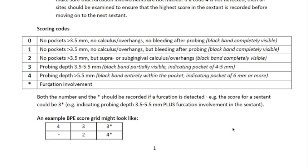The guidelines also show an example BPE score grid and what it might look like when charted. There are six squares indicating six sextants: upper right, upper anterior, upper left, lower left, lower anterior, and lower right. In the left-hand sextants, we have furcation lesions indicated by the stars. In the lower right, we have a dash, which indicates one of two things: either there are no teeth at all in that sextant, or there is only one standing tooth. If there is one standing tooth in a sextant, that tooth is incorporated into the score of the adjacent sextant.